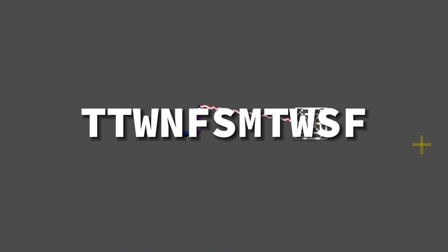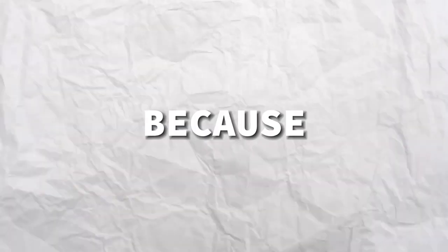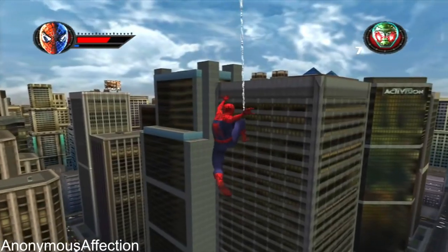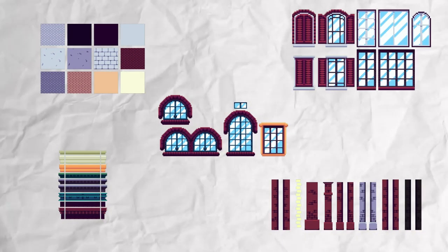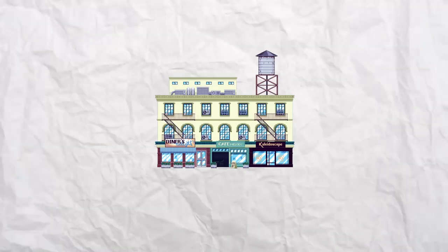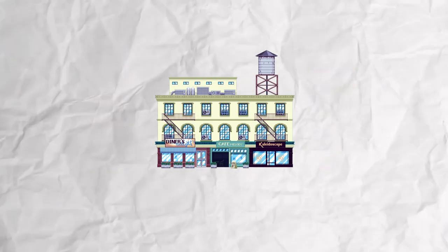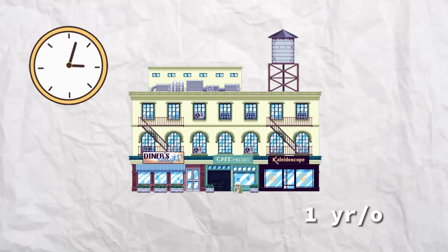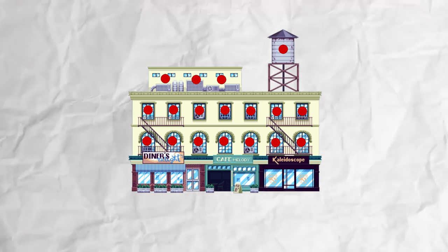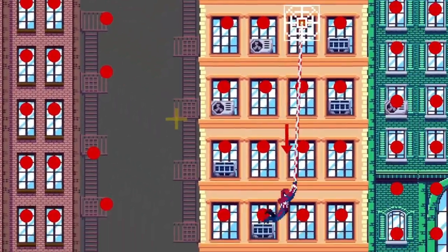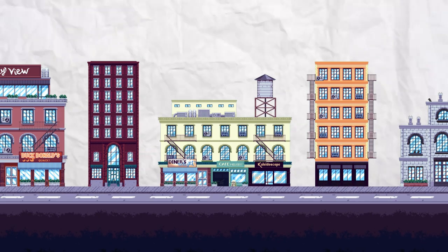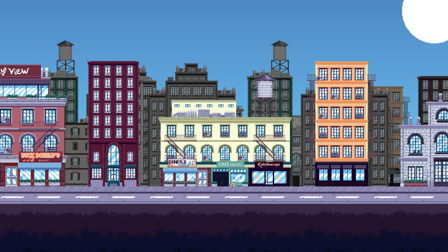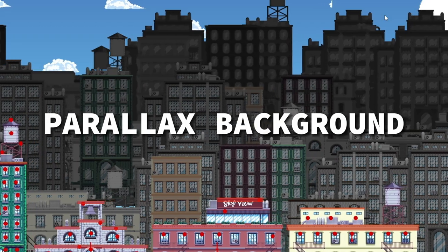Because we don't want our Spider-Man to look like he's swinging from Uncle Ben, we're gonna need some buildings. These are some puzzle pieces we've made, so we can basically mix and match them to create different variations of buildings. We just have to wait for them to have puberty, so we can have something to swing on. Now we should be able to swing from building to building. We can also polish the environment a bit by adding a road and repurposing the buildings to be part of a parallax background.